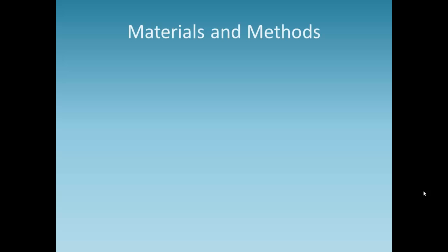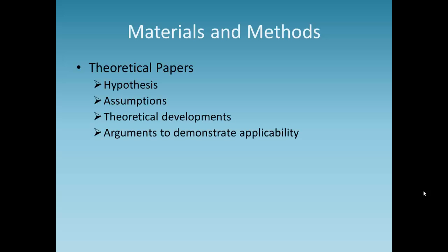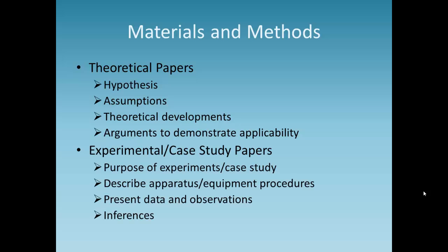The Materials and Methods section is necessary for both theoretical and experimental or case study papers. In theoretical papers, this section should include a hypothesis, assumptions, theoretical developments, and arguments to demonstrate applicability. In experimental or case study papers, this should include the purpose of the experiment or case study, a description of the apparatus or equipment procedures, and an explanation of the data and observations.